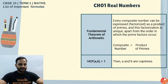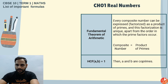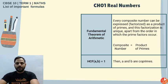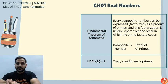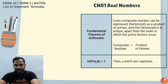Let us start with our formulas. First, from Chapter 1 — Real Numbers — the Fundamental Theorem of Arithmetic states that every composite number can be expressed as a product of primes. This prime factorization is unique and different for all numbers. For example, 6 = 2×3, 10 = 2×5, 16 = 2⁴.